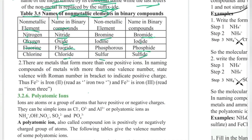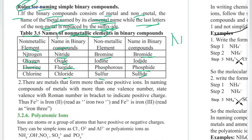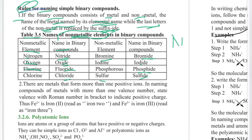For example, the compound sodium chloride: sodium is used as the metal element name, and chlorine becomes chloride. So we can see that sodium chloride is the name of the compound formed from sodium and chlorine.